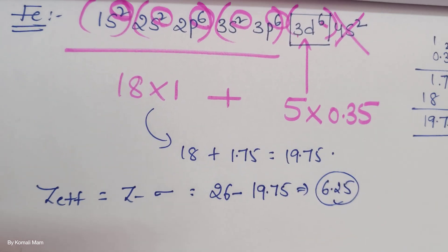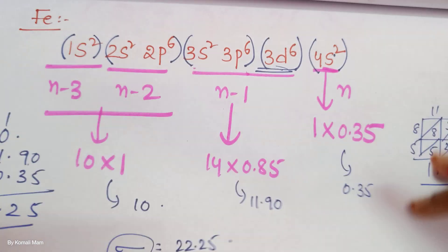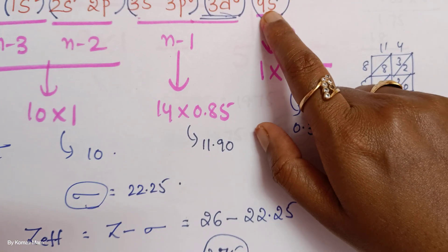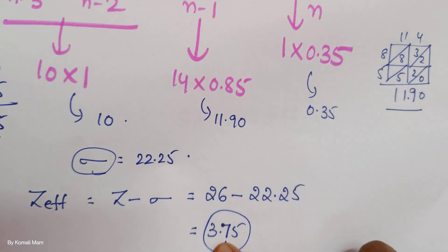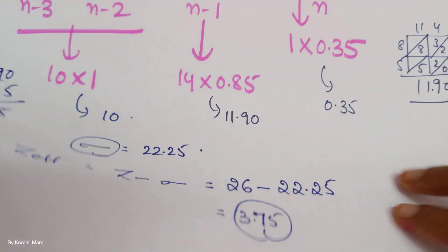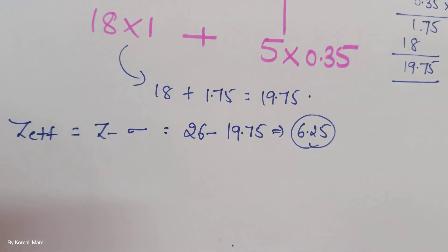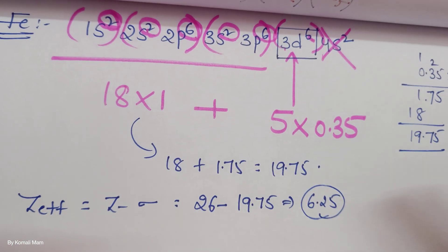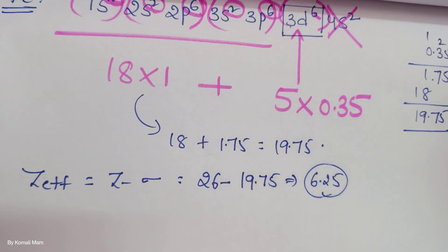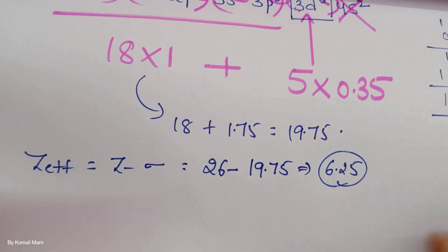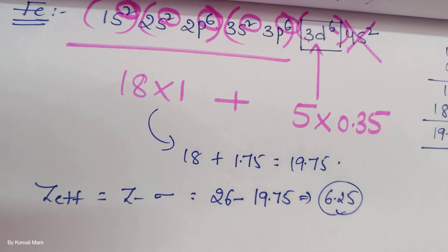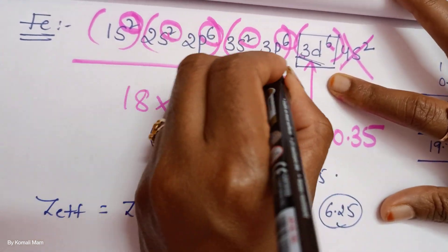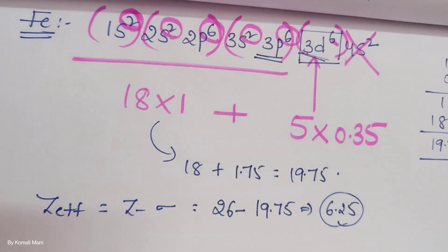So for the 4S electron, the nucleus power of attraction is 3.75. For the 3D electron it is 6.25. The attraction on 3D is more than 4S because 3D is closer to the nucleus. Now let us see how to calculate for 3P.